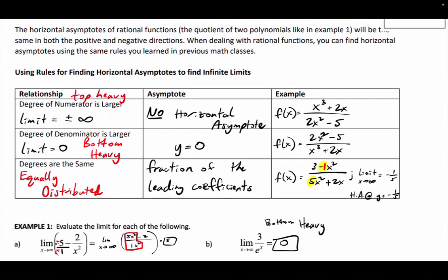The opposite is bottom-heavy, where the degree in the denominator is larger. The limit's always zero. The asymptote is y equals zero. There is a horizontal asymptote, and it's always at y equals zero.